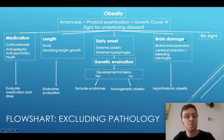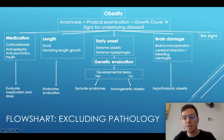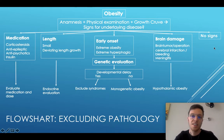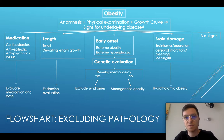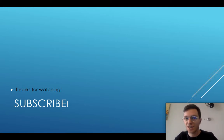When obesity is combined with brain damage — such as a brain tumor, brain operation, cerebral infarct, bleeding, or meningitis — look for hypothalamic obesity. Lastly, when you have no signs for any pathology, just do the screening we discussed and you don't have to look for further pathologies. This was my in-depth overview on risk management and obesity in children. I hope you learned a lot. If you have any questions, ask them in the comments below, and if you want to see more of my videos, please subscribe. I'll see you next time.